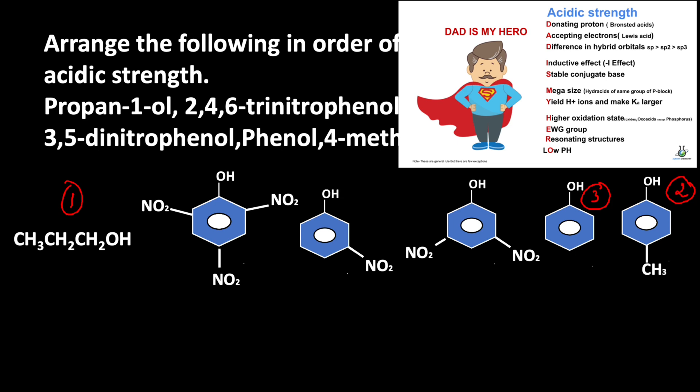Now if you look at the remaining three compounds, the nitro group is attached. Nitro group is an electron withdrawing group. It enhances the delocalization of negative charge in the phenoxide ion.